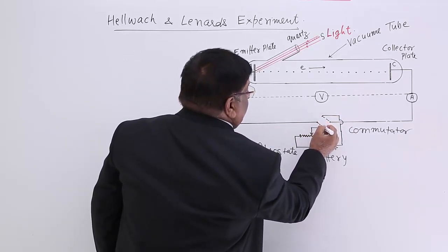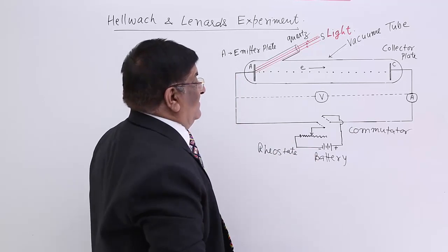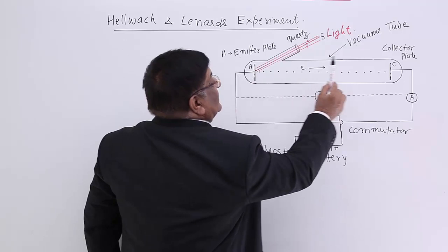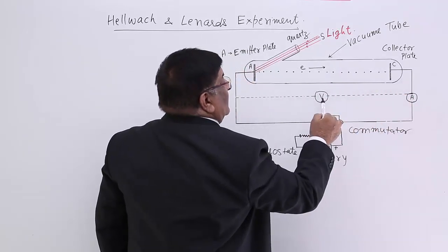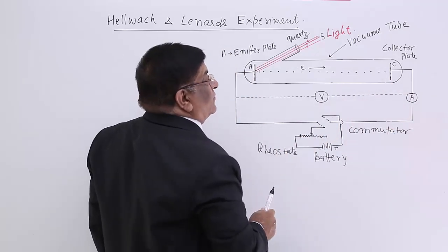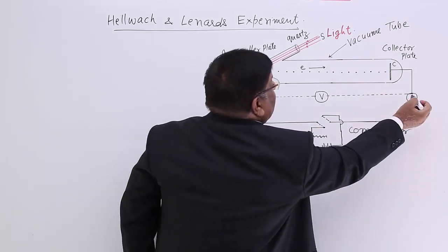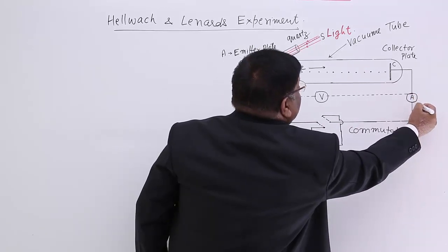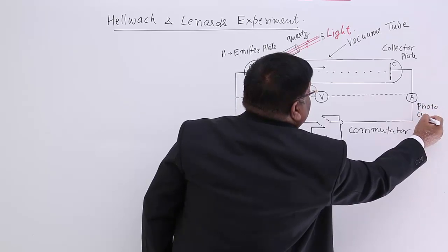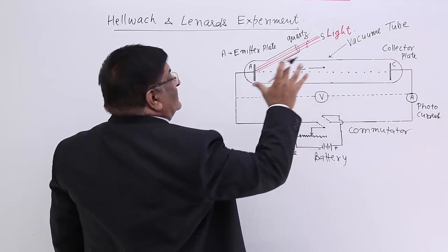So now this terminal is plus and this is minus, and we can change the voltage. At any time we want to see the potential difference across these two, for that we have fitted a voltmeter here across the two. We also want to find out how much current is flowing, so in this circuit we have fitted an ammeter which will give us a reading of the photo current.